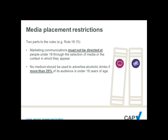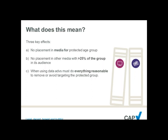In addition to that, in certain instances, this ancillary point comes in: no medium should be used to advertise alcoholic drinks — or whatever the other product is — if more than 25% of its audience is under 18. Breaking it down, there are basically three requirements that the rules place on advertisers.